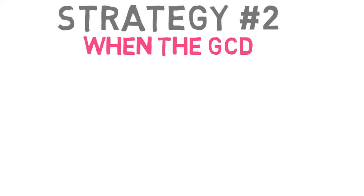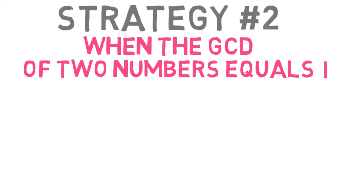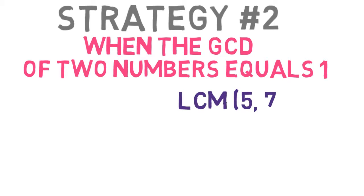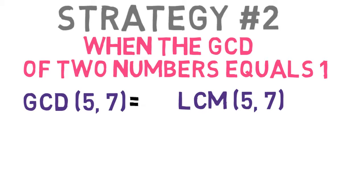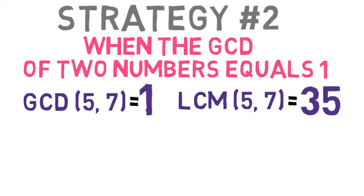A second strategy is to notice whether the GCD of the two numbers equals 1. For example, suppose you want to find the LCM of 5 and 7. The GCD of these two numbers is 1, so to find the LCM, just multiply 5 times 7, which equals 35.